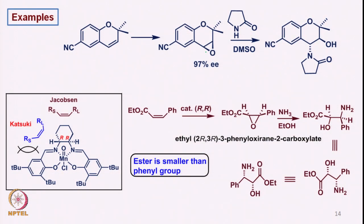Looking at examples of the Jacobson-Katsuki reaction: if we take an olefin of this kind and react with the oxo complex, the sterically hindered position from the two geminal dimethyl groups means epoxide opening occurs from the less hindered side. The nucleophile attacks from the alpha side because the epoxide is beta, forming such a product. We can thus achieve a regio- and stereoselective opening of the epoxide, leading to a product with two asymmetric centers bearing two different functional groups.